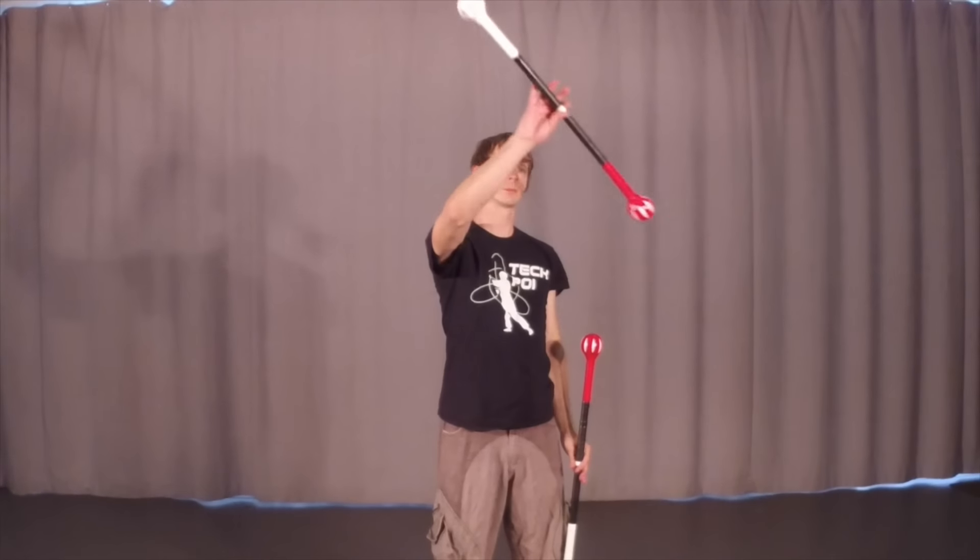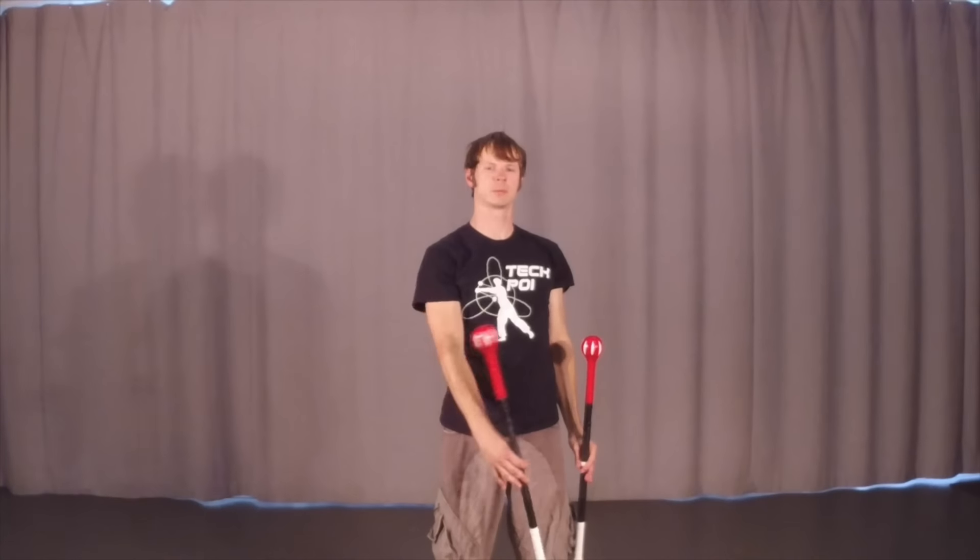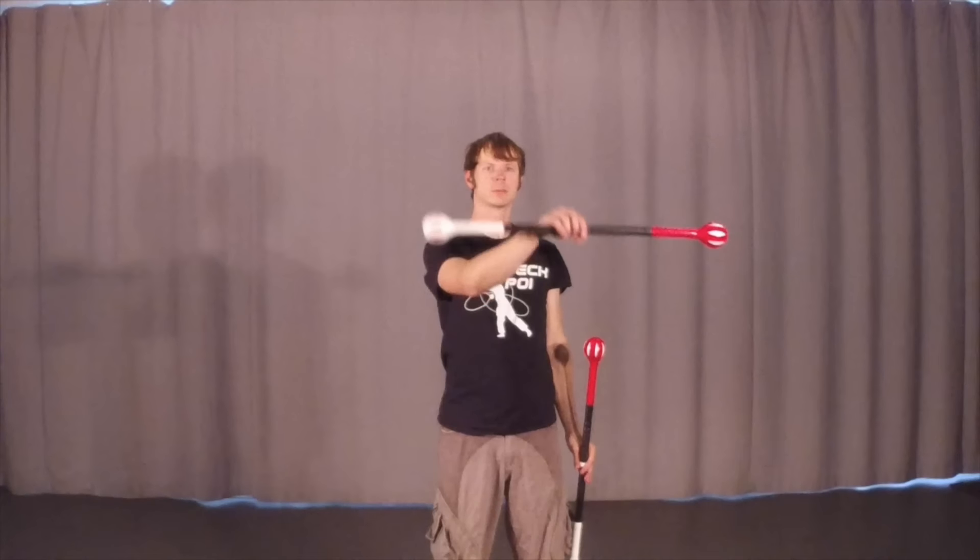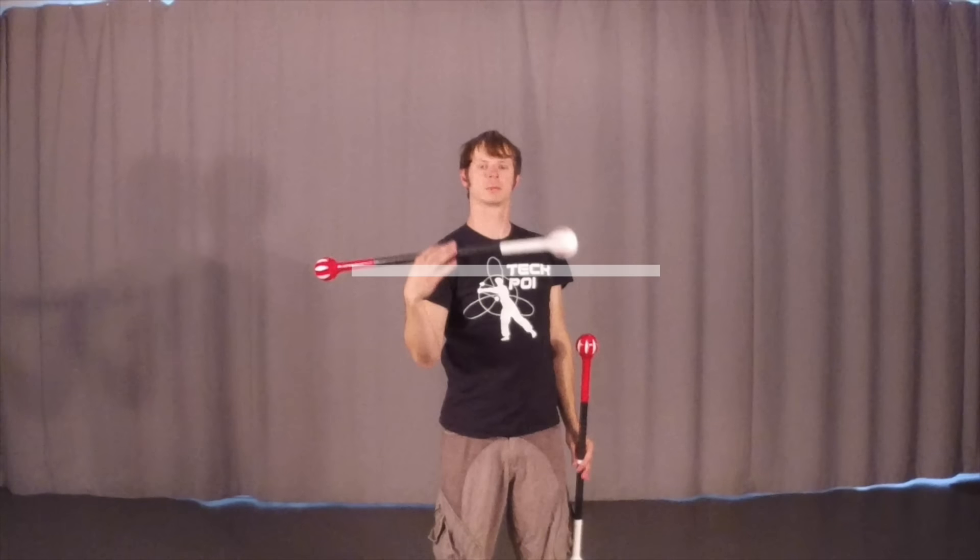Another useful tool for making these types of transitions involves cateyes. Cateyes are a staff move in which one end of the staff moves back and forth along a straight line that is as long as the staff is itself. This results in the other end of the staff creating a long, wide ellipse.